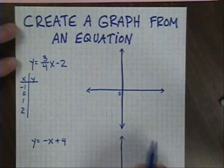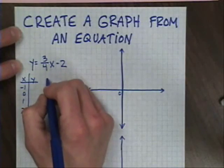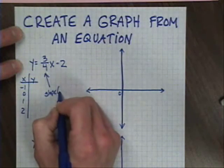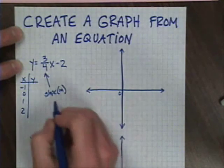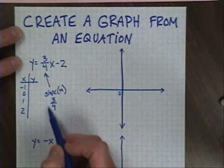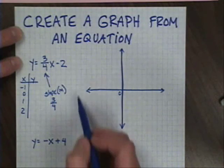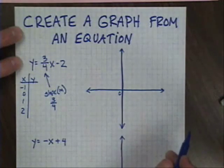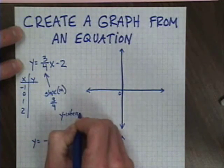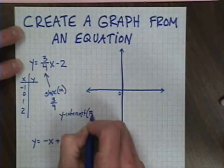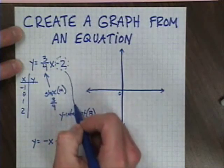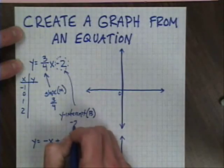With linear equations, however, there is a faster way. We can remember that the number in front of the x is called your slope, commonly referred to with the letter m. In this case, my slope is 3/4. That's going to tell me the direction — positive, because it's a positive 3/4 — and the steepness: 3 up, 4 over. As for my starting point, my y-intercept, commonly referred to with the letter b, is the negative 2. This is my starting point.